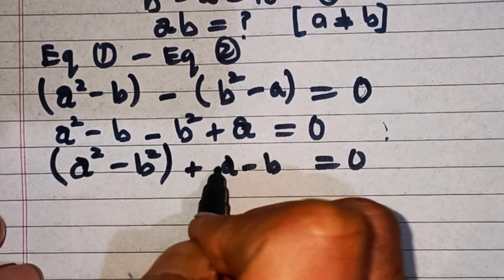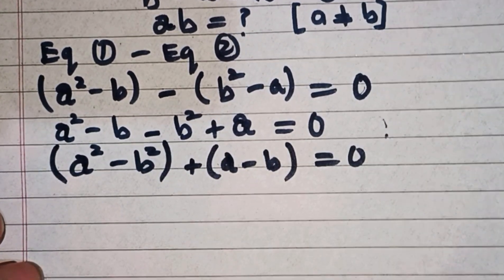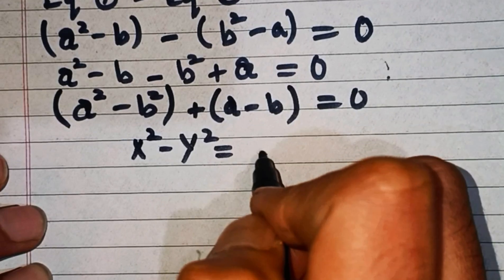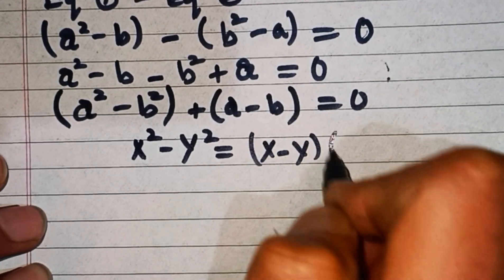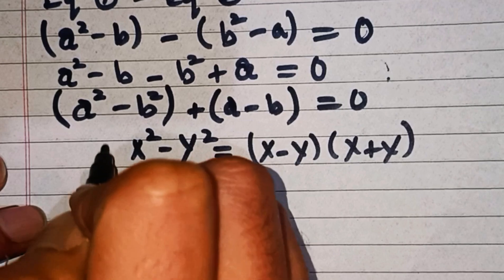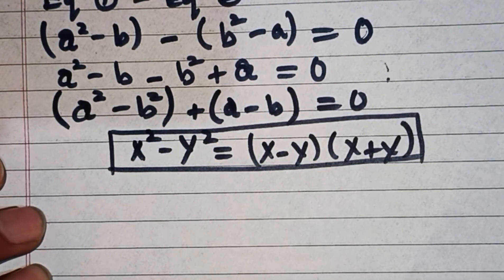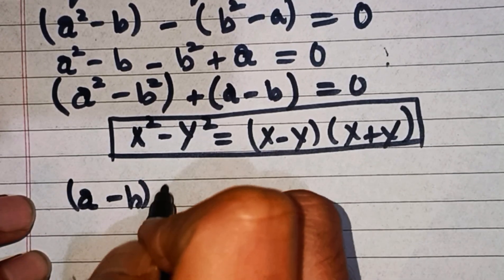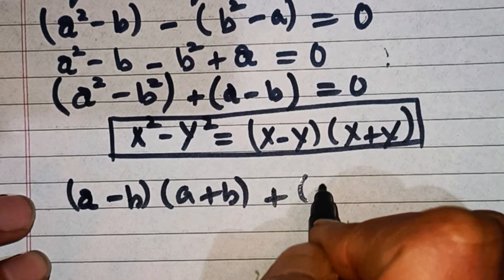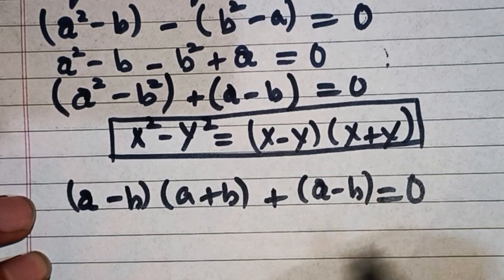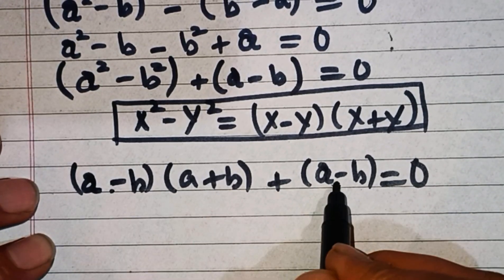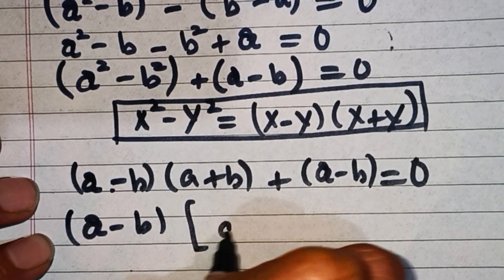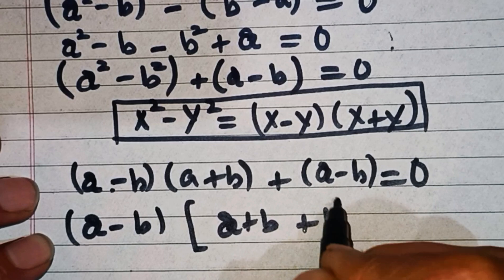Now let's take this in brackets. We know that x² - y² = (x - y)(x + y), so we can write a² - b² as (a - b)(a + b). This gives us (a - b)(a + b) + (a - b) = 0. Since a - b is common, we factor it out: (a - b)(a + b + 1) = 0.